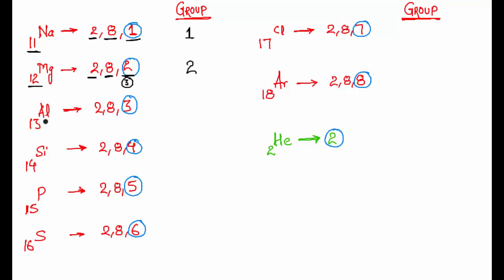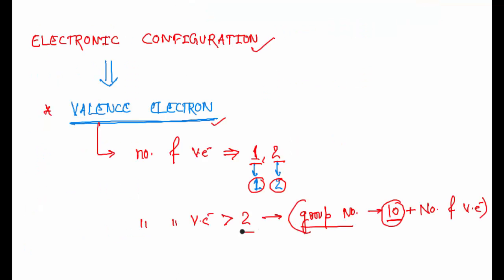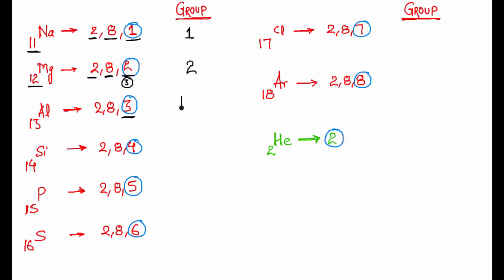In the case of aluminium, the number of valence electrons is greater than 2. To find the group number, you add the number of valence electrons plus 10. So the group will be 10 plus 3, that is group 13.